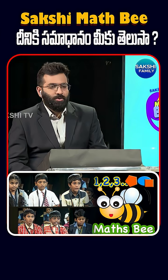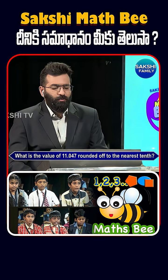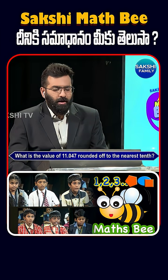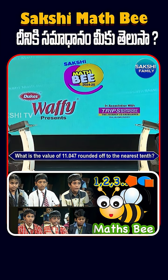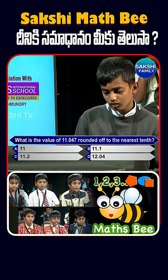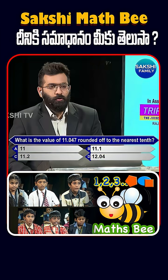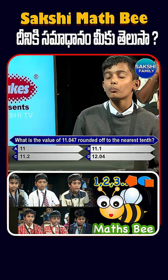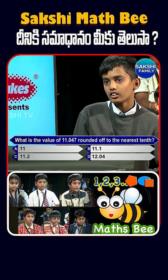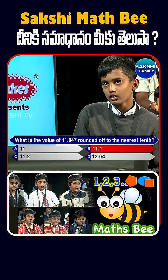Next question, coming up for you on the screen now. What is the value of 11.045 rounded off to the nearest tenths? Options: 11, 11.1, 11.2, 12.04. — Option B, 11.1. — Are you sure? — Yes, sir. — Please lock option B, 11.1.